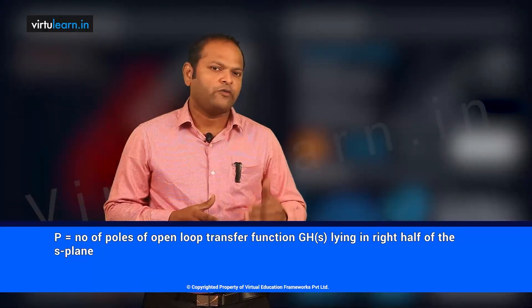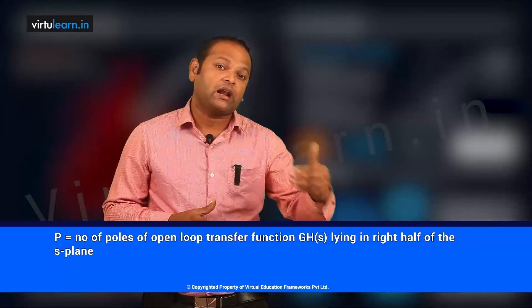P information we can find out from the open loop transfer function GH(s). P is the number of open loop poles lying in the right half of the S plane. N can be found from the Nyquist plot. We will see how to find the Nyquist plot. Then using the Nyquist stability formula Z = P - N: if Z = 0, the closed loop system is stable; if Z ≠ 0, the closed loop system is unstable.